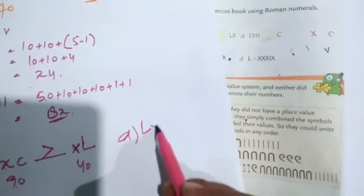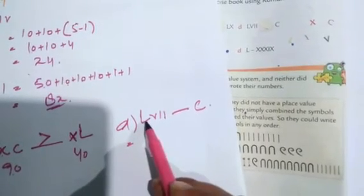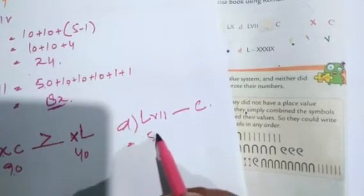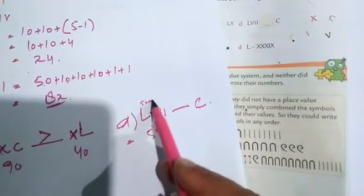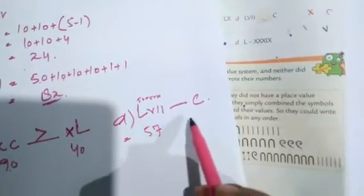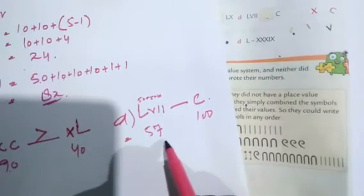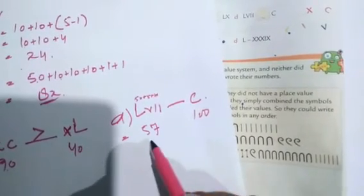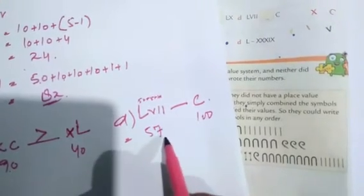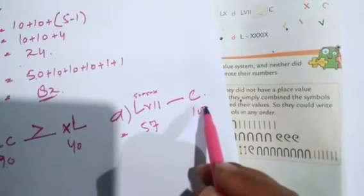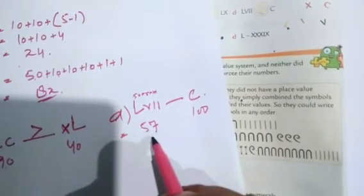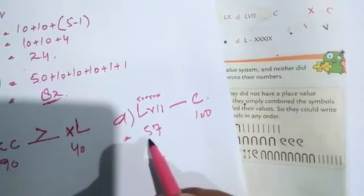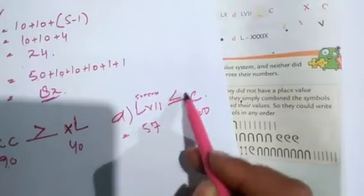For the next comparison, C means 100 and the other value is 57. Comparing them, 100 is bigger than 57 because 100 is a three-digit number and 57 is a two-digit number. We know a three-digit number is greater than a two-digit number, so here the symbol is greater than, and 57 is less than 100.